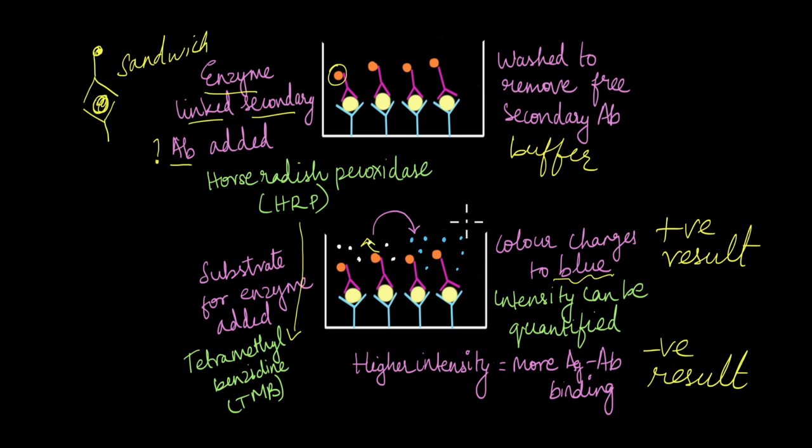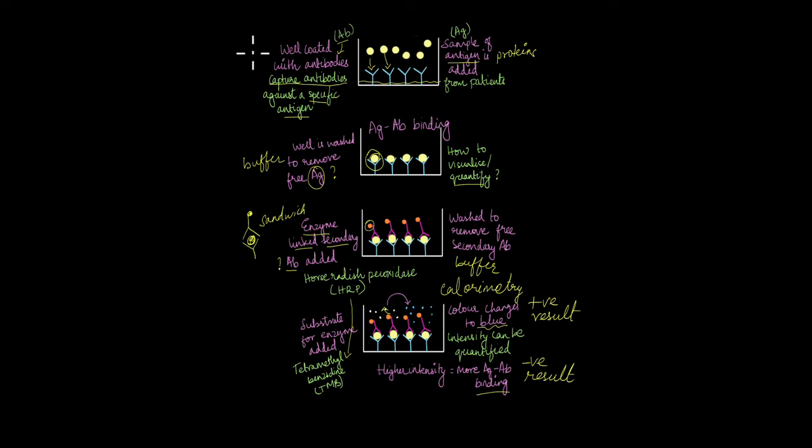So a color change is a qualitative indication of the presence of the antigen. What about a quantitative indication? Well, the intensity can be quantified using methods like calorimetry, and that will tell us how much of the antigen is present in the sample. Higher the intensity, more there is the antigen and antibody binding. So this is the entire concept of sandwich ELISA.